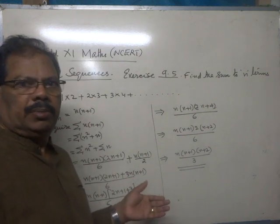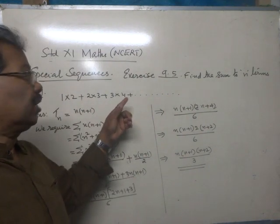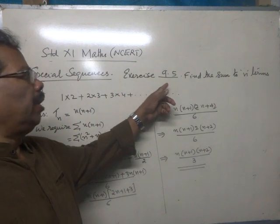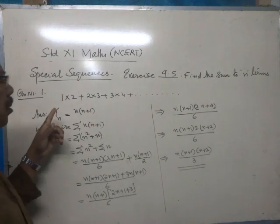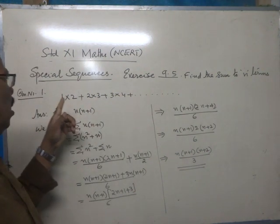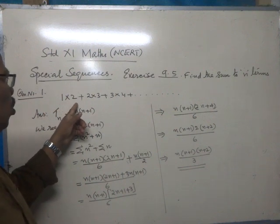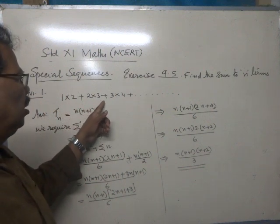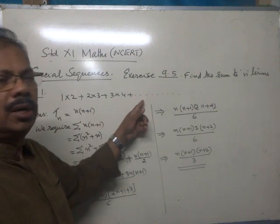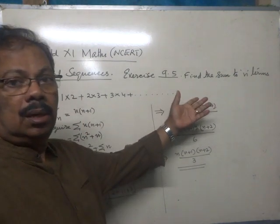Now let us continue Plus 1 Mathematics Special Sequences, Exercise 9.5. Find the sum to n terms. Question number 1: 1×2 + 2×3 + 3×4 + ... up to n terms.